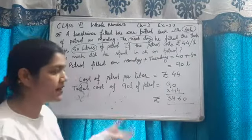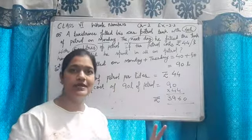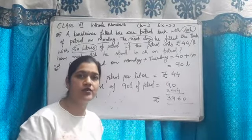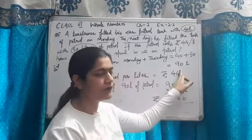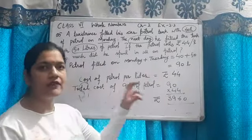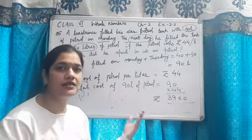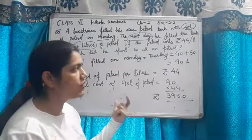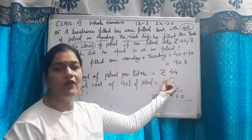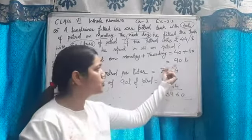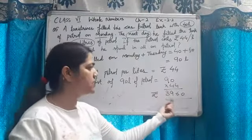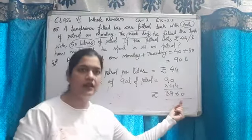First, total petrol kitna fill kia hai both days mein, Monday and Tuesday. 50 plus 40 is 90. 1 litre ki cost di hai 44, so hamein total 90 litre ki cost find karni hai. By multiplying: 90 multiplied by 44, that is 3960. Thank you.